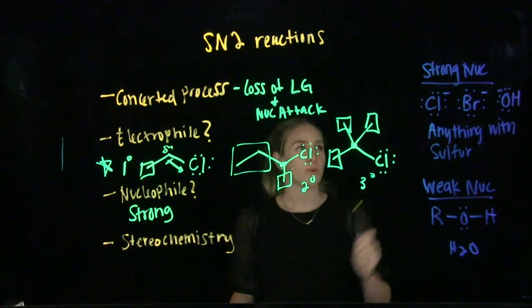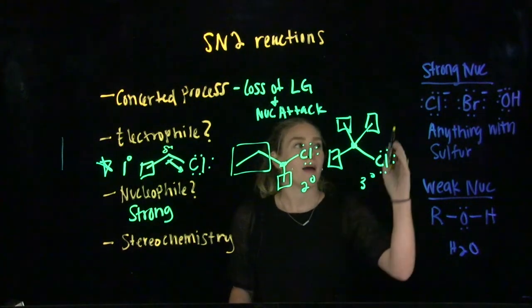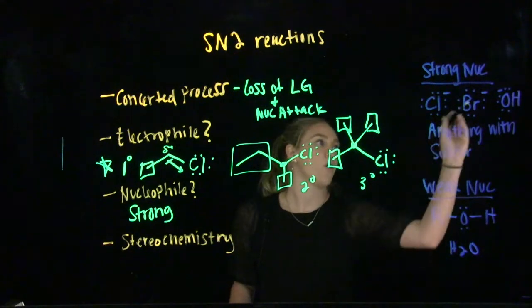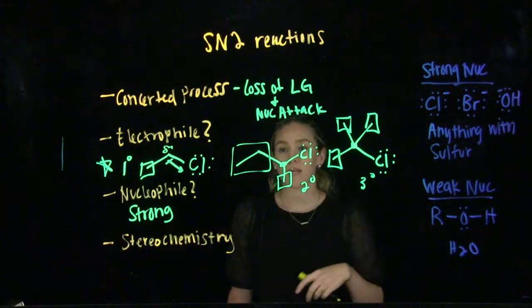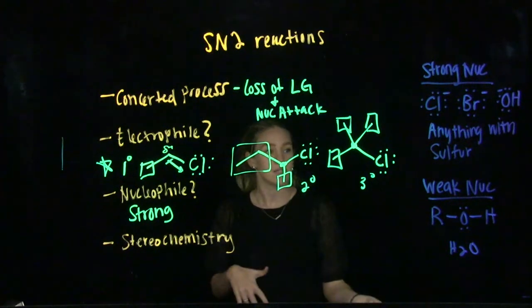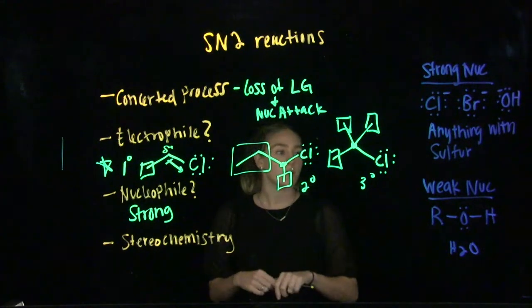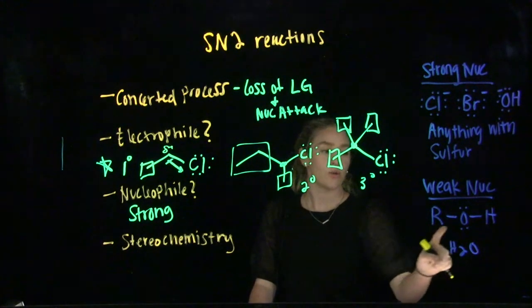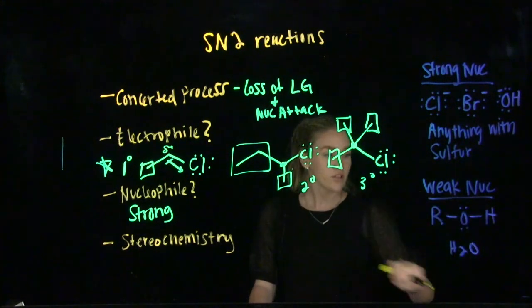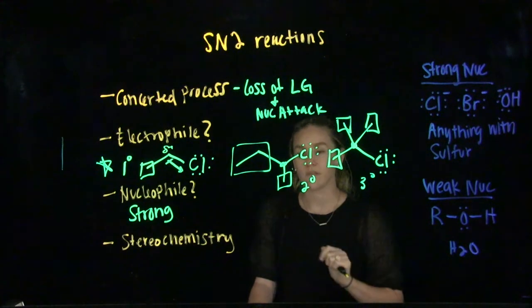Strong nucleophiles are usually going to be halogen ions, OH ion. Anything with sulfur is very nucleophilic because sulfur is a good nucleophile in itself. Weak nucleophiles would be something like a carbon hydrogen group attached to an OH, or water is a weak nucleophile as well.